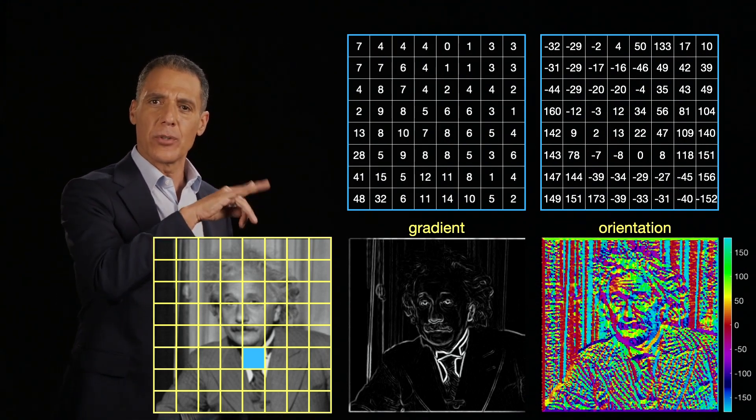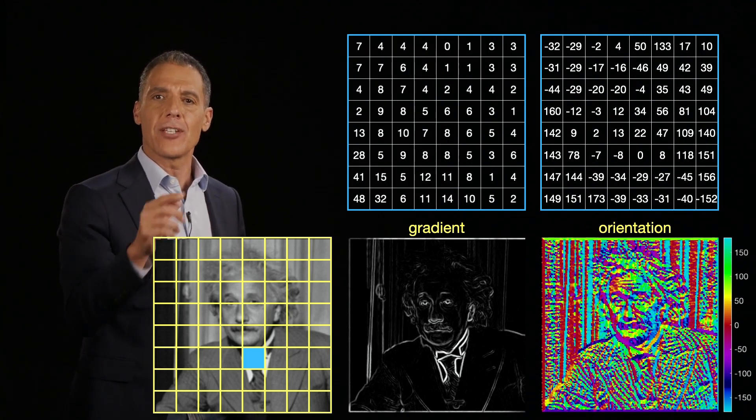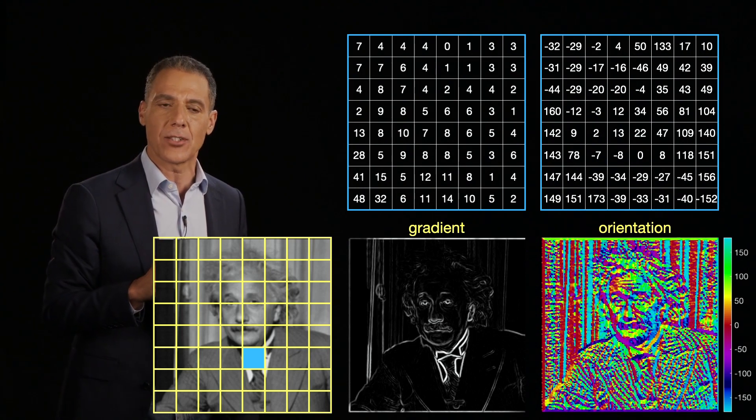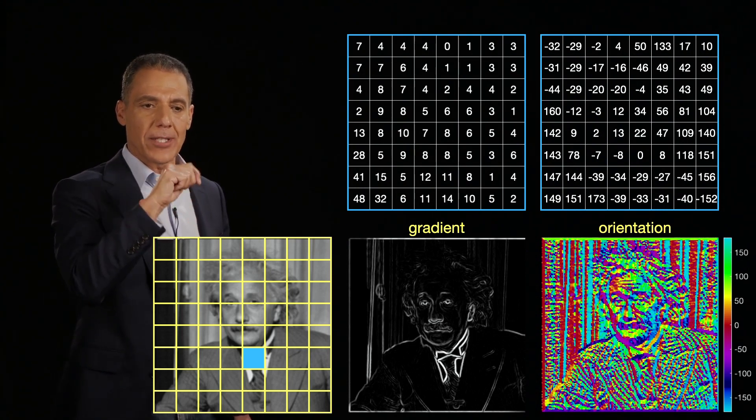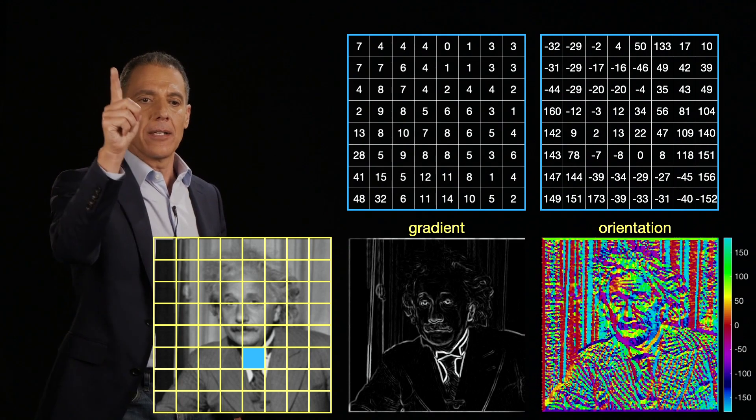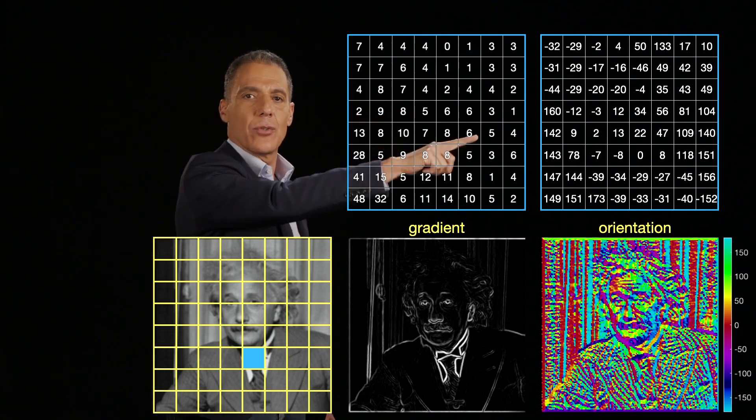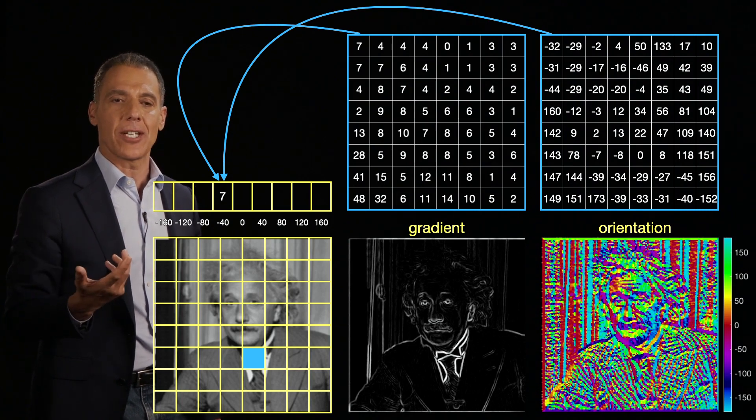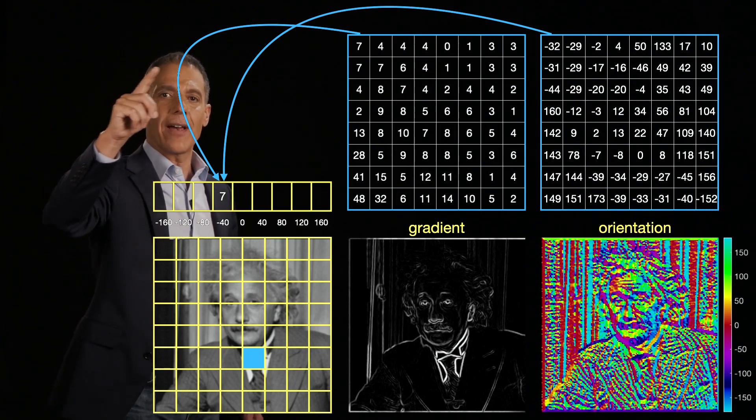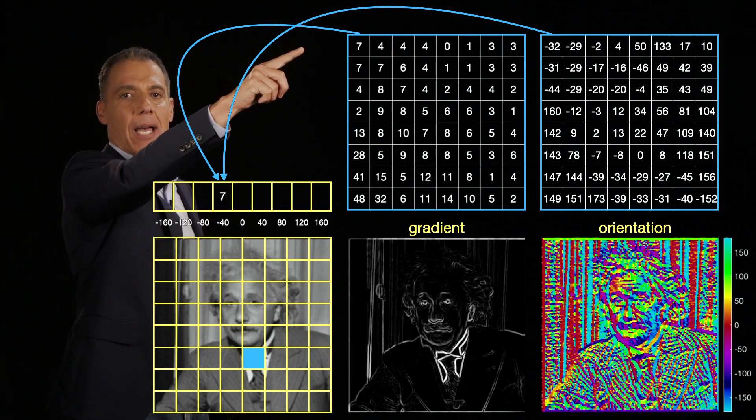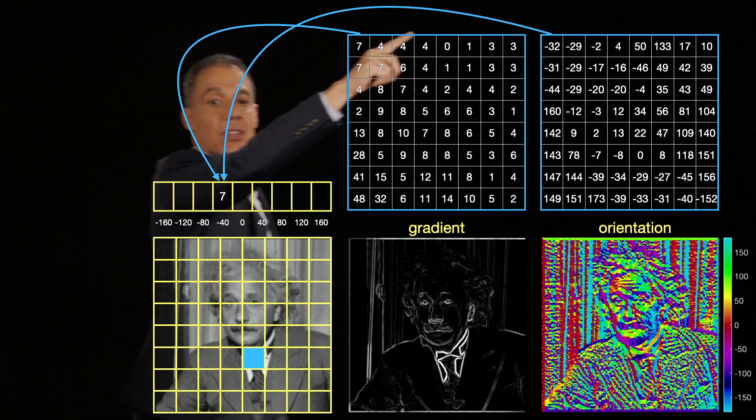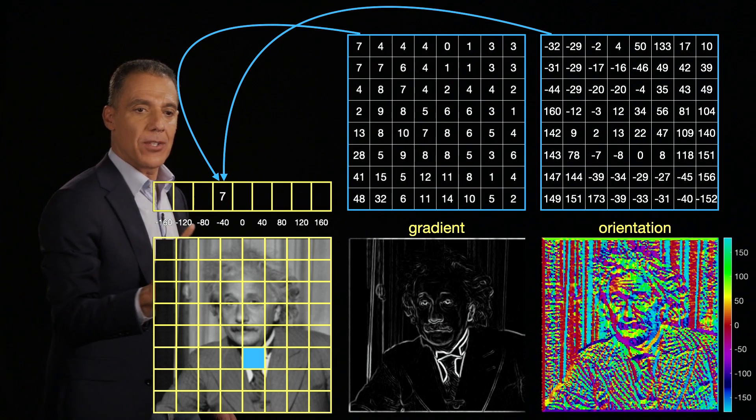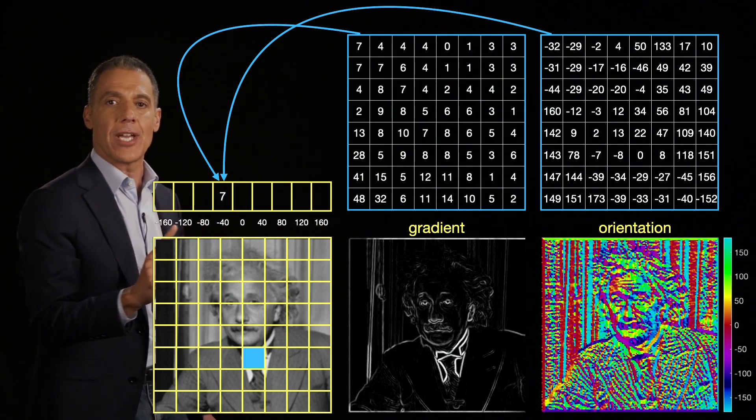So the gradient was the square root of the sum of the squares. The orientation is the arctan of the ratio of the y derivative over the x derivative. Okay. So take one of those little squares down there. That's your little block. Go look at the magnitude and the orientation. And now what we're going to do is create some summary statistics. So for each value over here, I'm going to look at the orientation and I'm going to look that up in this discretized version of the orientation.